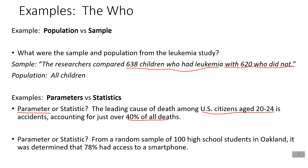Another example — parameter or statistic? From a random sample of 100 high school students in Oakland, it was determined that 78 percent had access to a smartphone. The keyword here is that we took a sample of 100 high school students in Oakland. There are definitely more than 100 high school students in Oakland — we just took a random sample. Since we're looking at a random sample, that makes this a statistic. That 78 percent is a statistic.